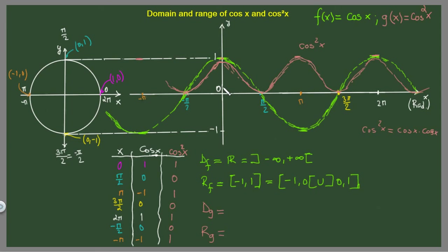The range of this function is situated between zero and one, with zero included. So the range is [0, 1]. The domain is the same as before — the function covers the whole x-axis — so the domain is ℝ, which also equals negative infinity to positive infinity.